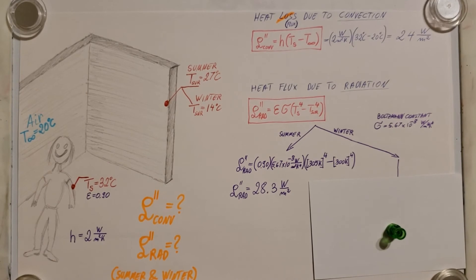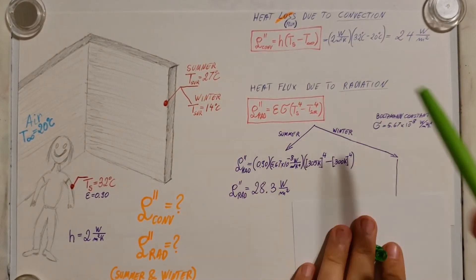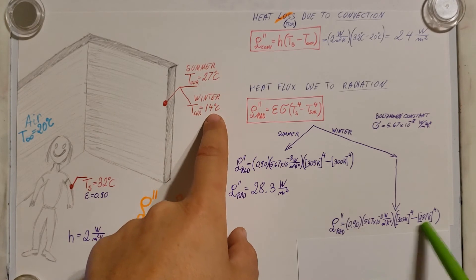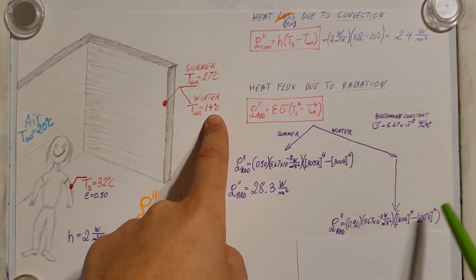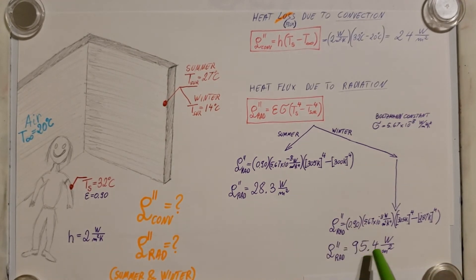Now let's do the exact same thing, but for winter, using our winter data. We know that we have our surface temperature at 14, converted to Kelvin. There it is, 287 Kelvin. And once we calculate that, we can see that now we have a 95.4 watts per meter square.